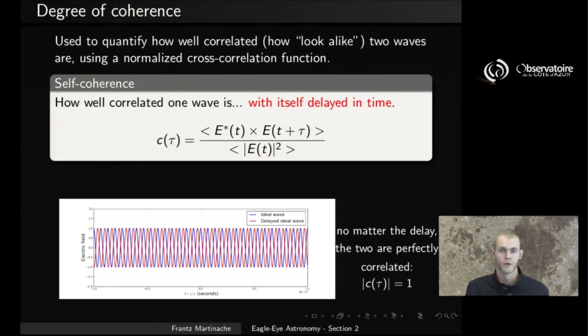There are many types of coherence. The first one we're going to look at is something called self-coherence, which is really the idea of simply how well correlated one wave is with itself when delayed in time. The way we formally write this is simply as a function of a time delay tau that happens to be the normalized cross-correlation between the electric field and itself delayed by the time tau.